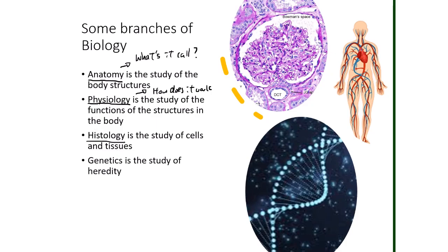We'll be looking at some microscope slides in the second semester so you can see what normal tissue looks like. There's also genetics, which is the study of heredity. We pass our genetic information to the next generation through DNA. For example, we can look at the probability of your child having type A blood. People can also do genetic counseling to determine the probability that their child will have something like cystic fibrosis, which might help them make an informed decision about having children.